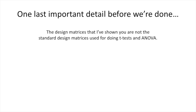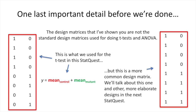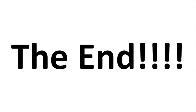One last important detail before we're done. The design matrices I've shown you are not the standard design matrices used for doing t-tests and ANOVA. This is what we used for the t-test in this StatQuest, but this is a more common design matrix for the same thing. Both design matrices will get the job done — it's just that the one on the right is more commonly used. We'll talk about this one and other more elaborate designs in the next StatQuest. If you like this and would like to see more StatQuests, feel free to subscribe, and if you have any suggestions for future StatQuests, put them in the comments below.